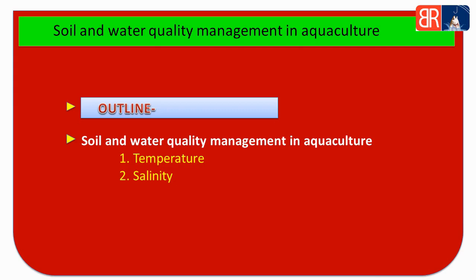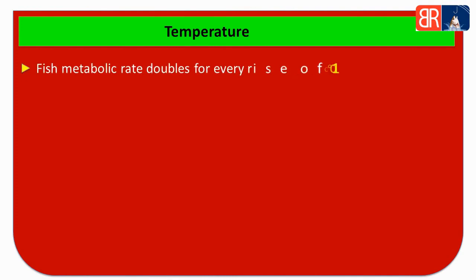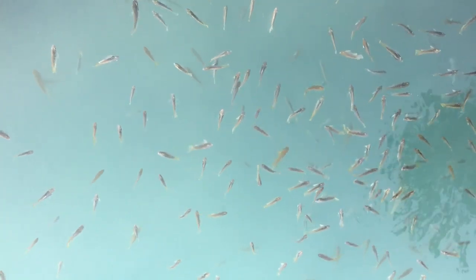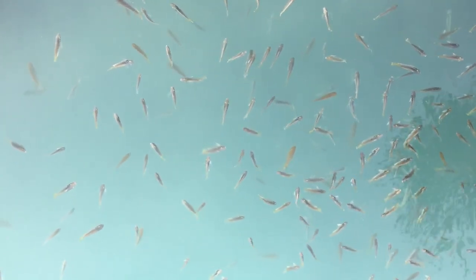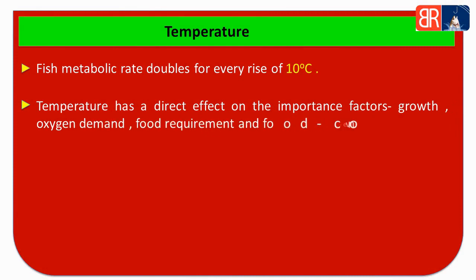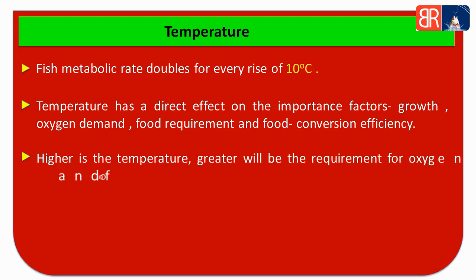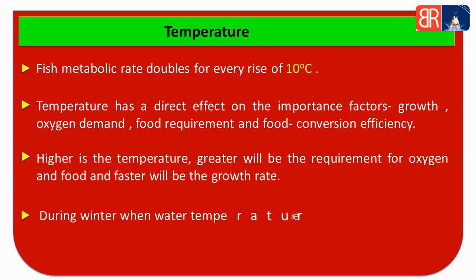Let's start with temperature. We all know that the fish's metabolic rate doubles with a rise of every 10 degree Celsius in temperature. Temperature has a direct effect on some important factors such as growth, dissolved oxygen, food requirement, and food conversion efficiency. The higher the temperature, the greater the fish's demand for oxygen and food.